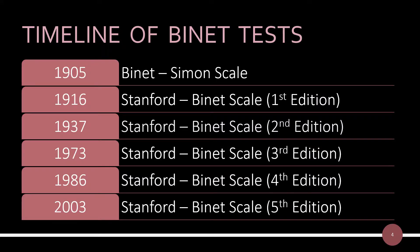This is how the timeline of the Binet test looked like. In the year 1904, the French government asked a psychologist named Alfred Binet to develop a method for identifying children who were unable to learn in a regular school. The government wanted to shift these children to special schools to reduce the crowding in the regular schools.